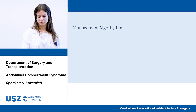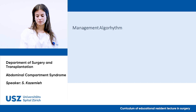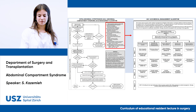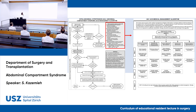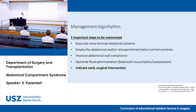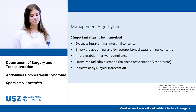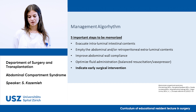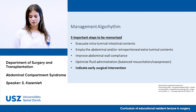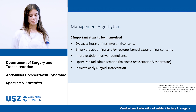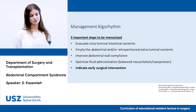There is a management algorithm defined by the World Society of Abdominal Compartment Syndrome. Five important steps: evacuate intraluminal contents by nasogastric or rectal decompression; empty abdominal or retroperitoneal extraluminal contents by percutaneous drainage; improve abdominal wall compliance by sedation and analgesia; optimize fluid administration with balanced resuscitation and vasopressors if needed; and importantly, indicate early surgical intervention.